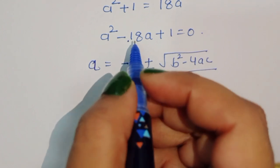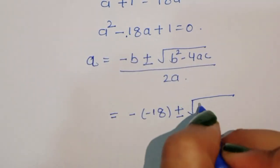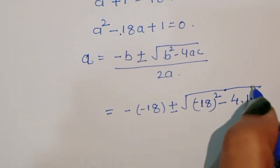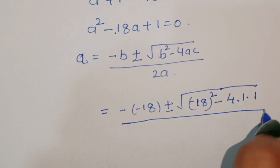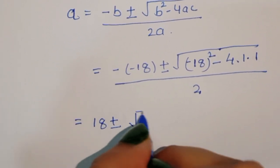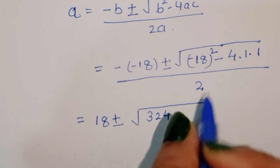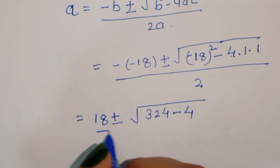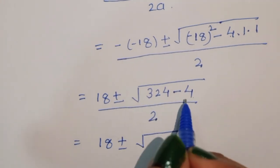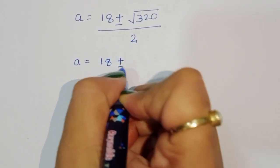Here b is minus 18, so minus b is plus 18. We get 18 plus or minus square root of 18 squared minus 4 times 1 times 1, divided by 2. Now 18 squared is 324, so we have 324 minus 4 divided by 2, which gives us 18 plus or minus square root of 320, divided by 2.